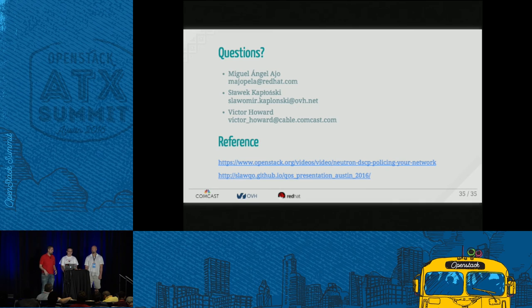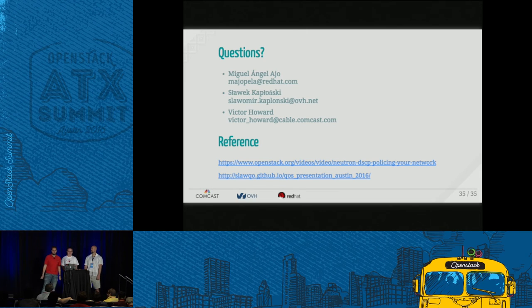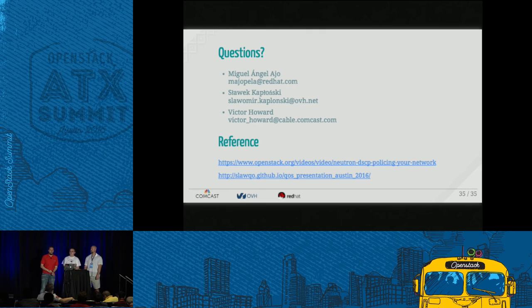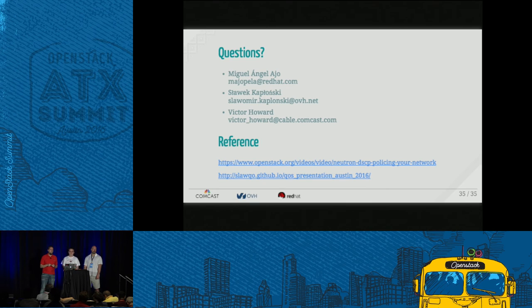Currently we are doing policing — just dropping packets — it's the simplest way to do it. We have some technical limitations on the Linux kernel because you can only do it on bridge ingress. Eventually we will get there; the kernel now has support for queuing, but we have to keep putting the pieces together — eventually we will be able to queue instead of police. The ECN approach uses a protocol that works at the IP and TCP level to notify the other side to slow down.